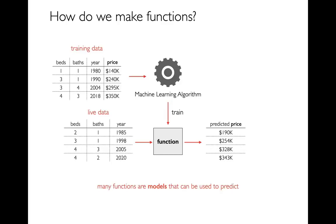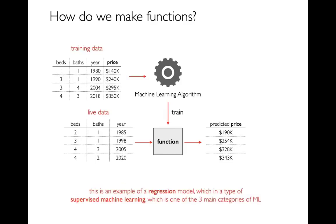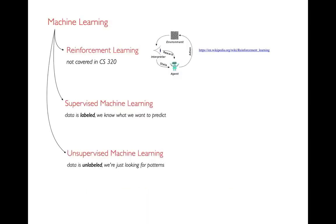You can imagine why that might be useful — maybe you're doing property assessments or you're a realtor trying to price a house. The example I've given here is a regression model, which is broadly a type of supervised machine learning — one of the three main categories. We're going to start broad and talk about these three areas, then discuss regression in more detail.